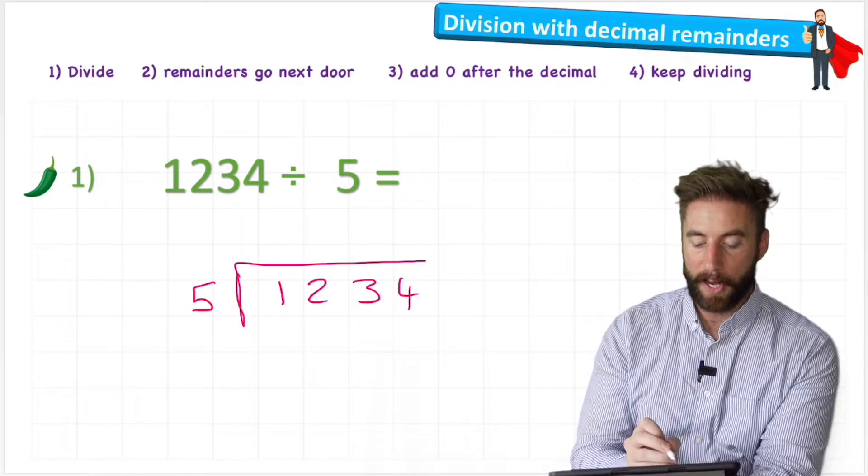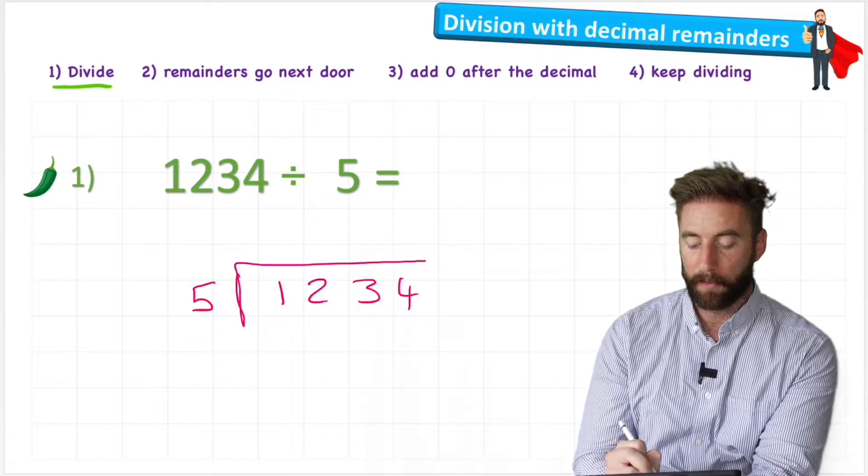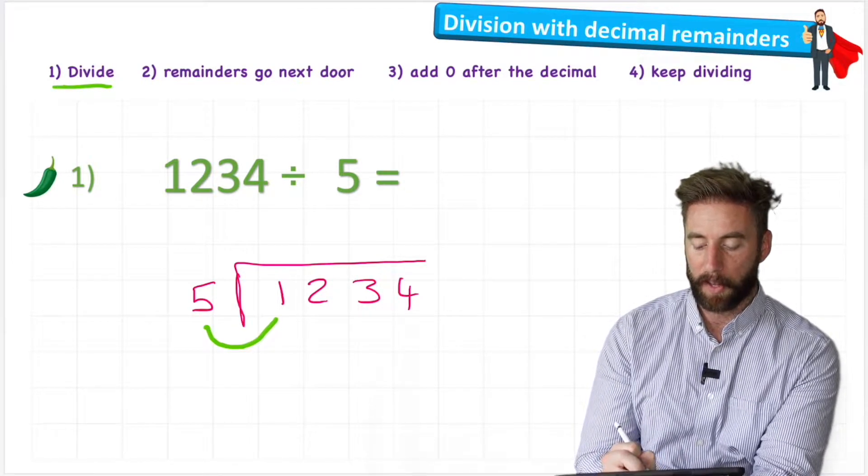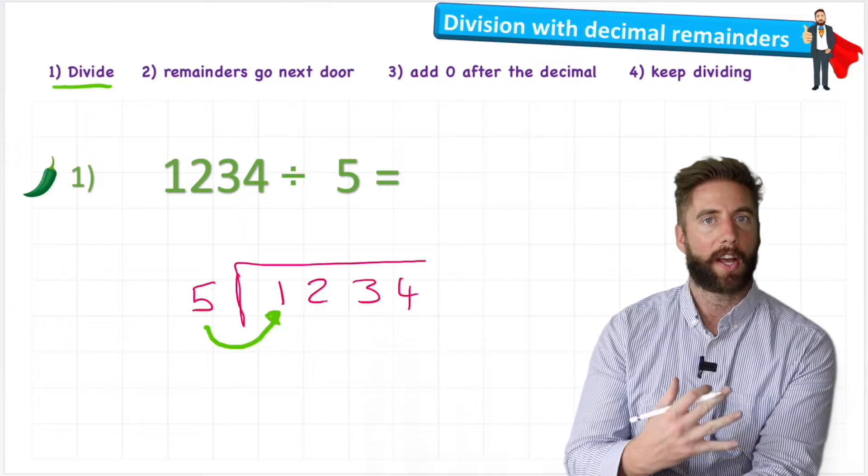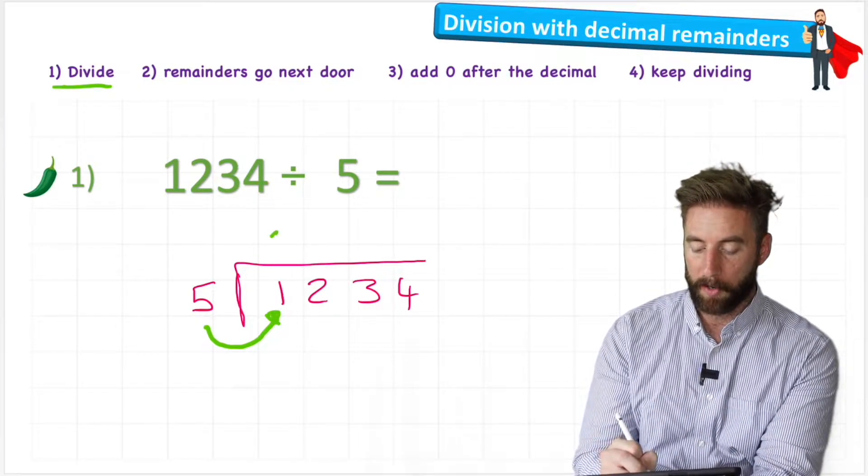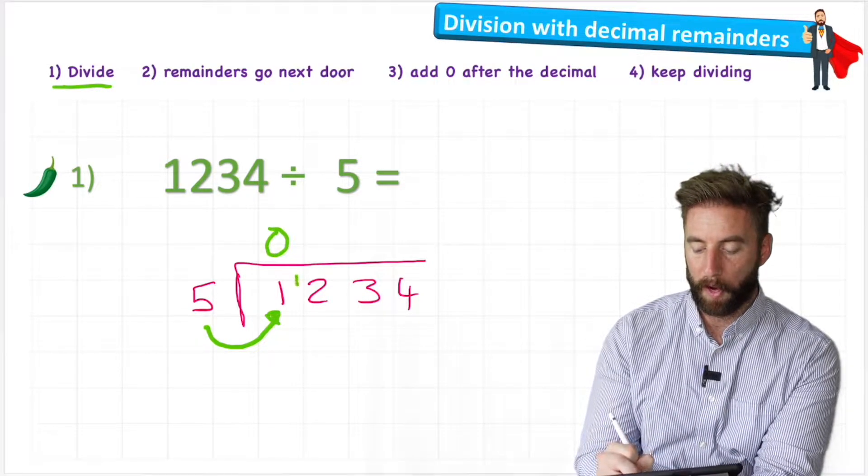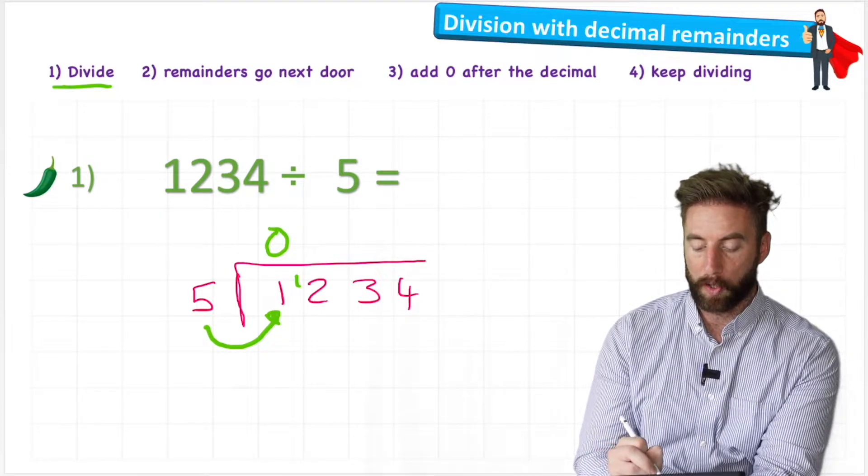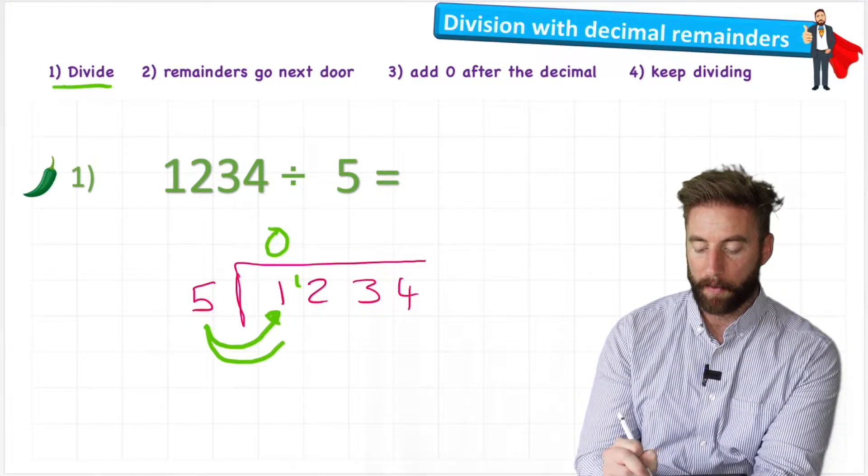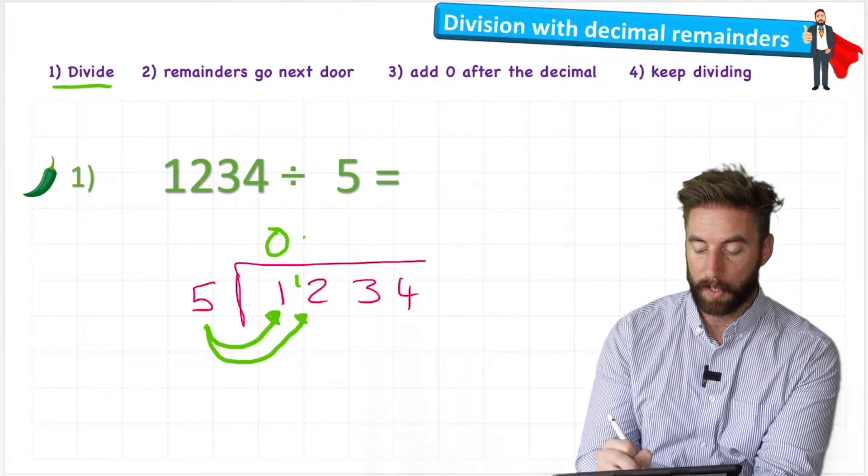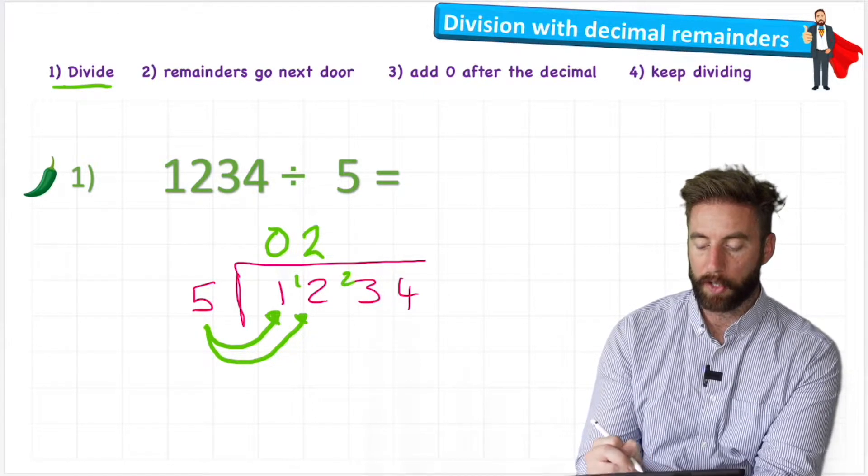And let's start dividing just like step one says. So first question, how many fives are there in one? And I can't get any fives out of one. So I'll put a zero and then I can move the one next door, make that two a 12. Now I can ask how many fives are there in 12. And there's obviously two with remainder two.